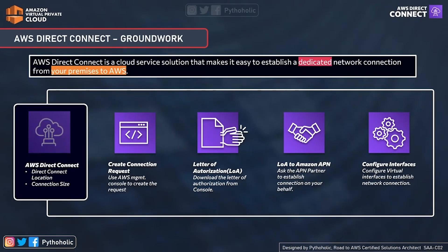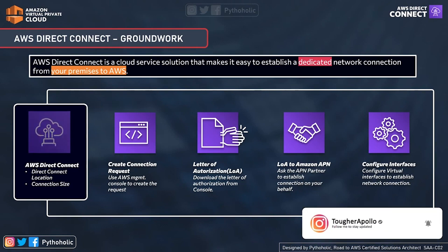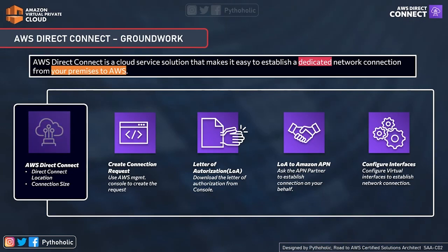Connecting on-premise networks to AWS Direct Connect locations is not that simple — there's a lot of ground work involved. The main idea is that Direct Connect links your internal network to an AWS Direct Connect location over a standard Ethernet optical fiber cable. One end of the cable is connected to your router at your location, and the other end to an AWS Direct Connect router — that is how you create the virtual interfaces.